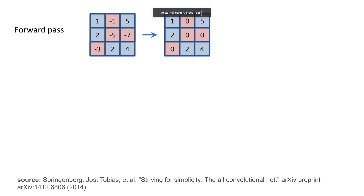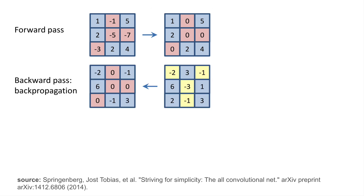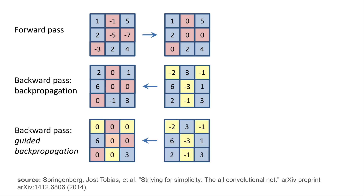To understand RELU masking, we need to introduce the concept of a guidance signal. This is anything that helps reduce the noise in a saliency map or guides the visualization towards features that have positively contributed to a model's prediction. With standard backprop, RELU layers already introduce one guidance signal: if the input from the forward pass is negative, the gradients from the backwards pass are set to zero. RELU masking adds an additional guidance signal — if the gradient from the backwards pass is negative, it is also set to zero.